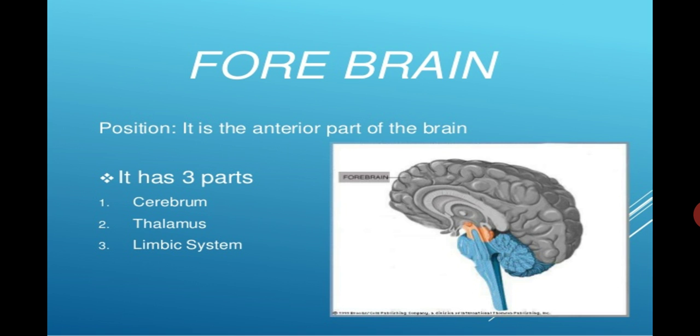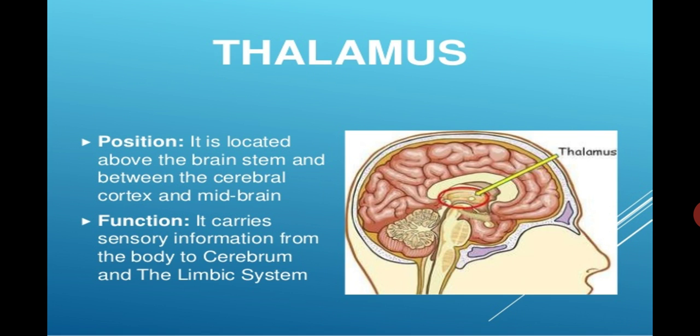First of all we will discuss forebrain. Its position: it is the anterior part of the brain. It has three parts: cerebrum, thalamus, and the limbic system. What is thalamus? It is located above the brain stem and between the cerebral cortex and the midbrain. Here you're watching this encircled in red color line, this is the thalamus.